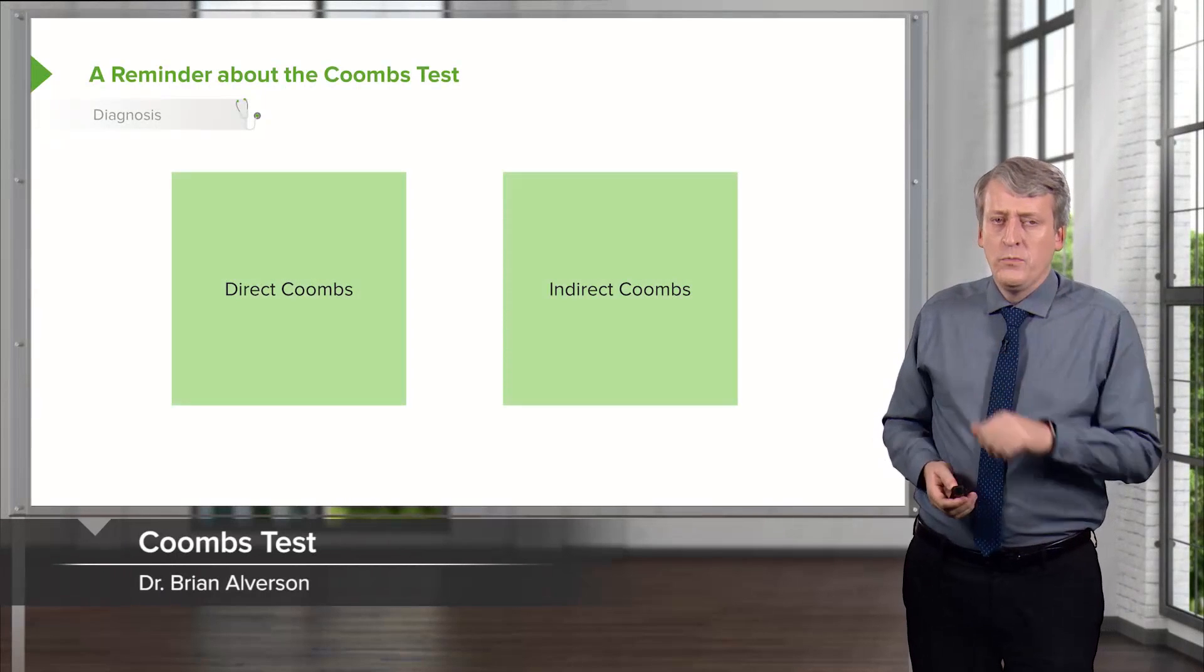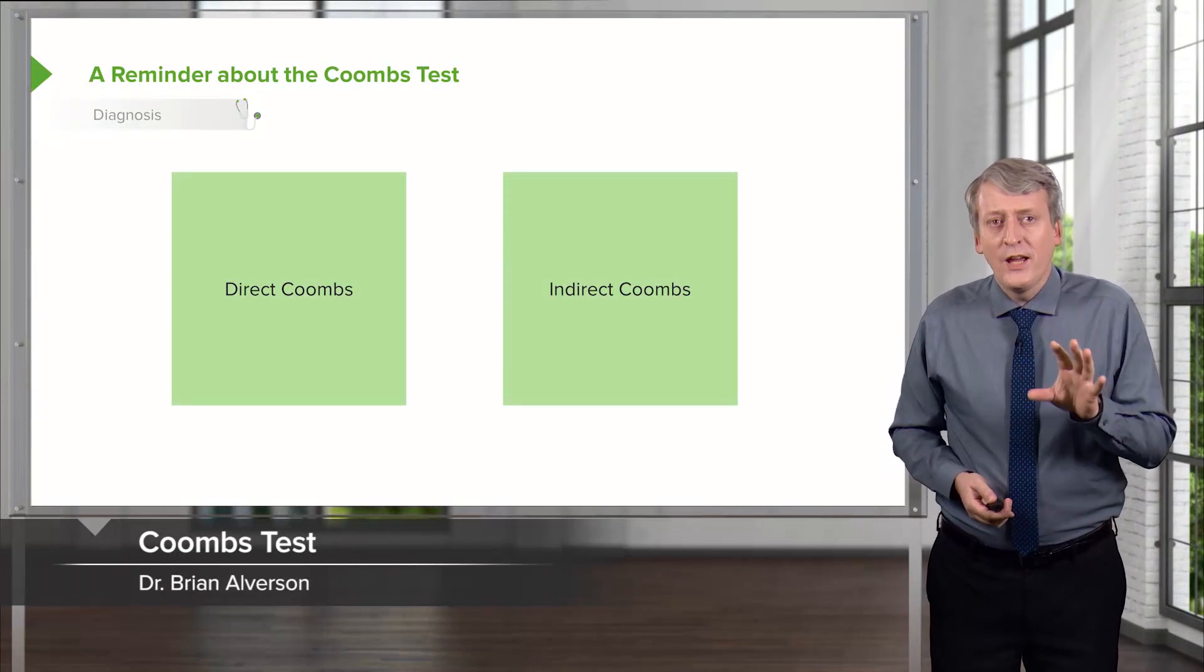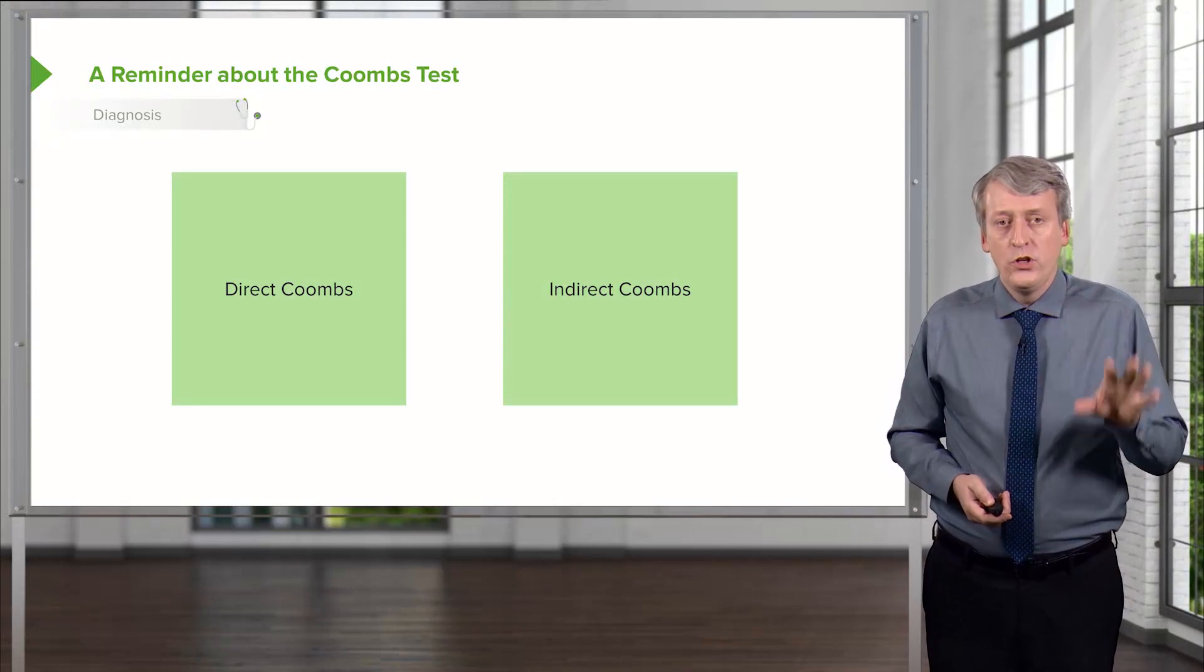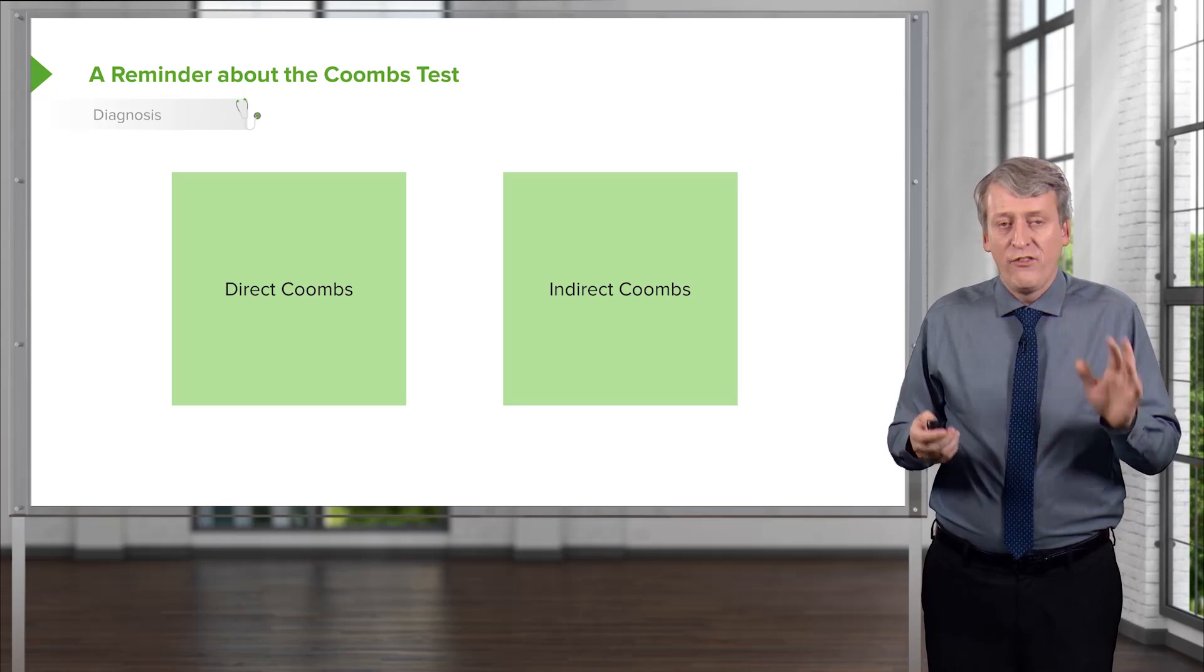Okay, let's talk about the Coombs test. The Coombs test is done to check whether there is an autoimmune component to our anemia. We see this fairly frequently.